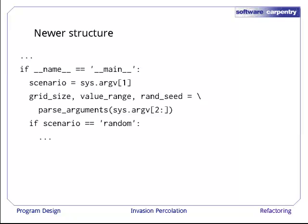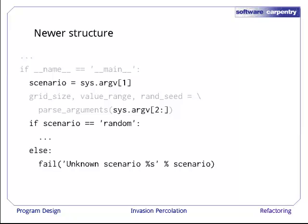If the user gives us the word random, then we will do exactly what we've been doing all along. If the user gives us anything else, for the moment, we will fail. But later on, we'll use scenario to determine which of our test cases we want to run.